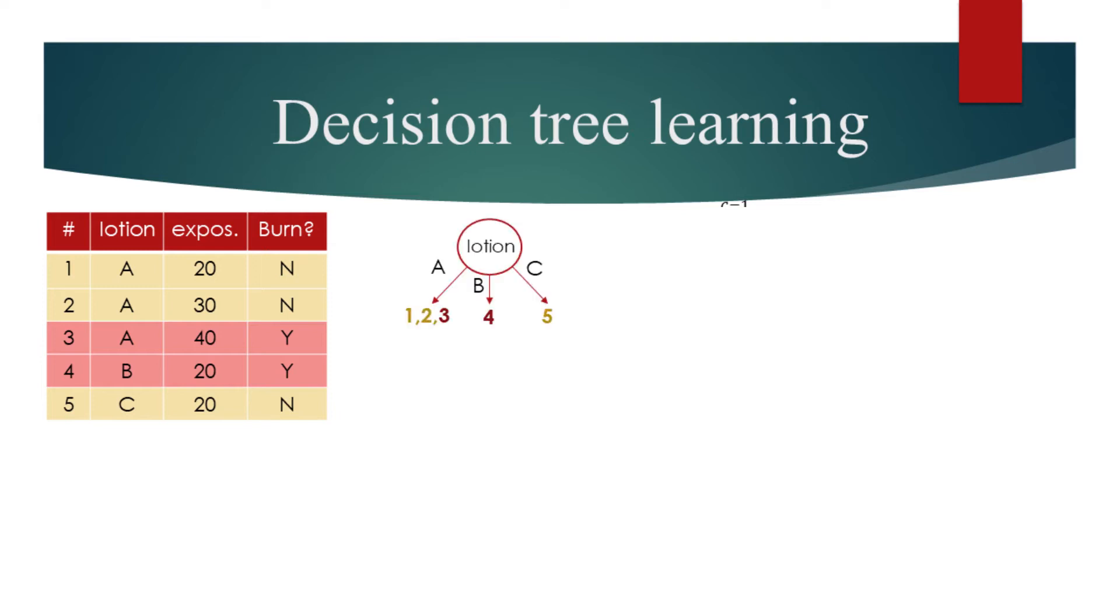Looking at the multi-way split based on lotion, the leaf on the left has two negative examples and one positive. When a node clusters data points that belong to more than one class, the node is said to be impure. Hence, the node on the left is impure.